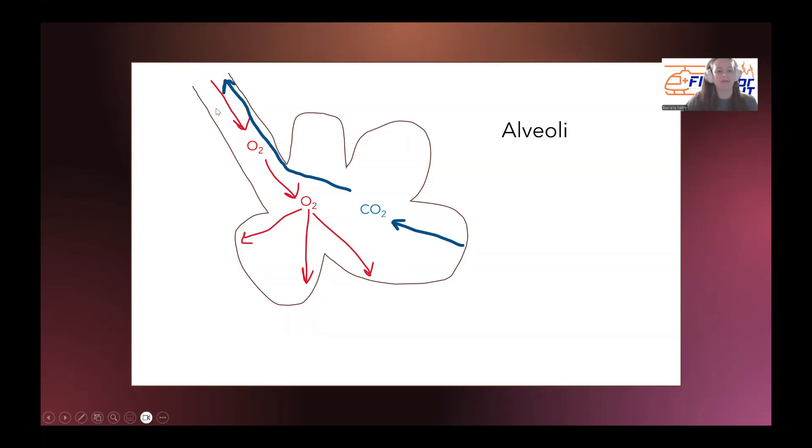goes into the alveoli, and then we exhale that carbon dioxide out through the bronchioles and the bronchi and the trachea. Same thing, oxygen is going the opposite direction. We breathe in the oxygen. It goes through the trachea and the bronchi and the bronchioles and eventually gets to these alveoli where it can go out and get into the blood.